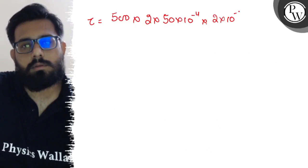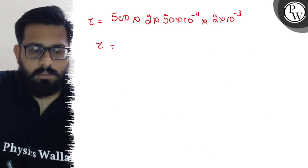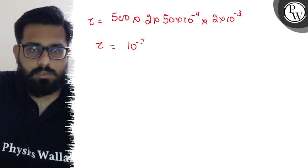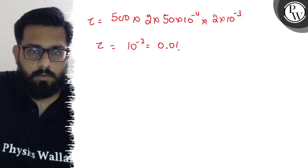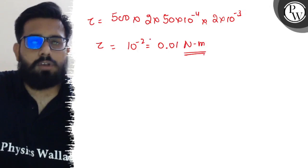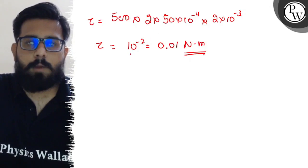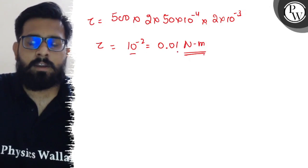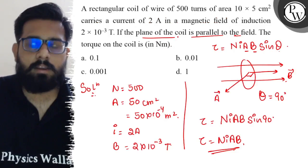Okay, so when we solve this part you will get a value of 10⁻², which can be written as 0.01 newton-meter. So once you solve this part you will get a value of 10⁻², which can be written as 0.01 newton-meters.